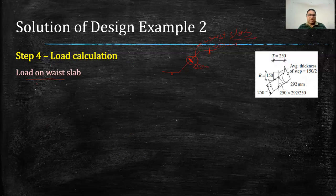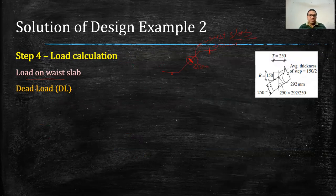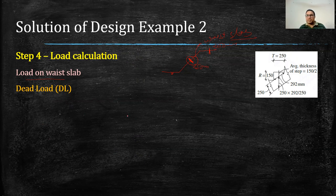In the waist slab, there will be two loads — dead load and live load. In the dead load there will be the self weight of the waist slab, self weight of steps, and floor finishing weight. All these loads we have to calculate. But before we calculate, we have to understand the concept of how we are going to calculate load in this case.